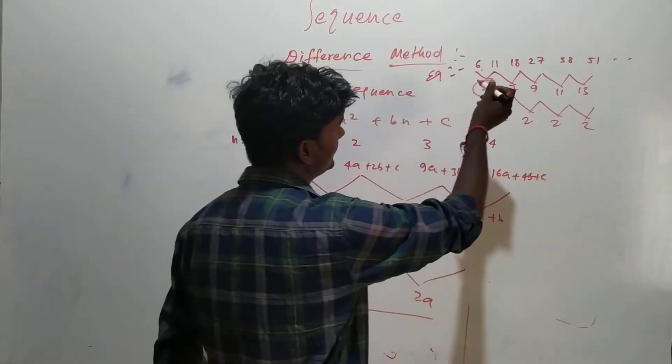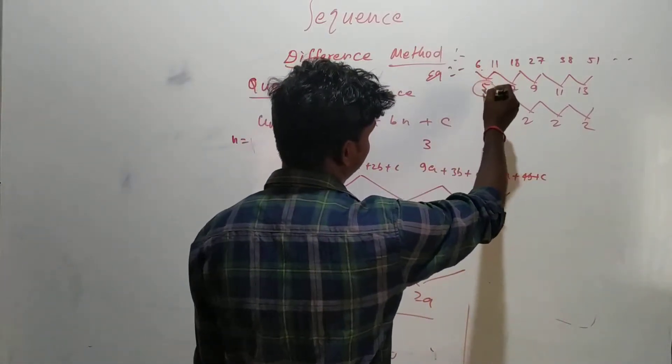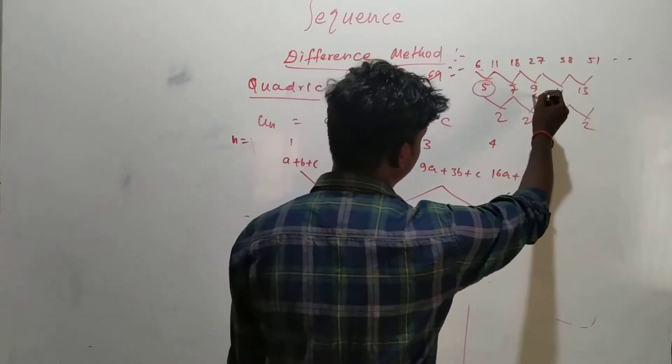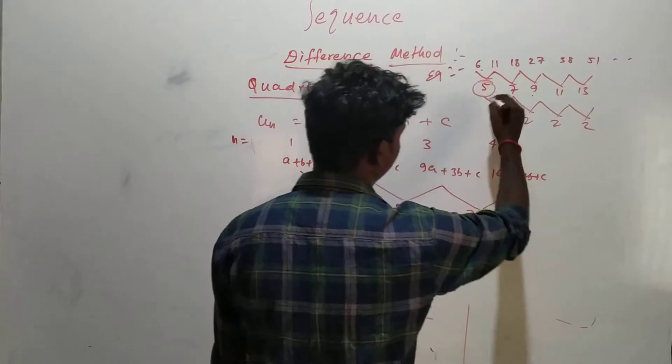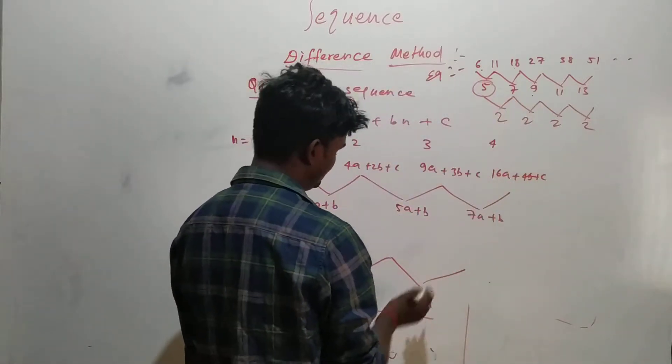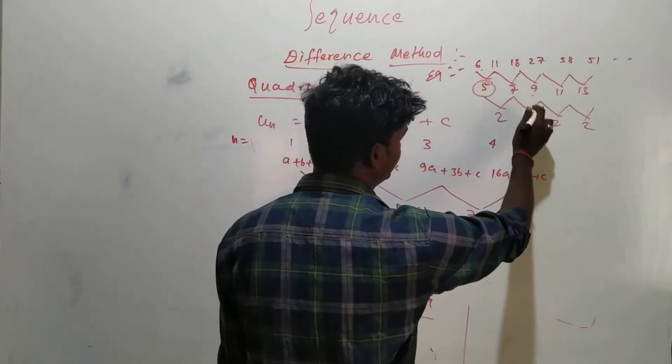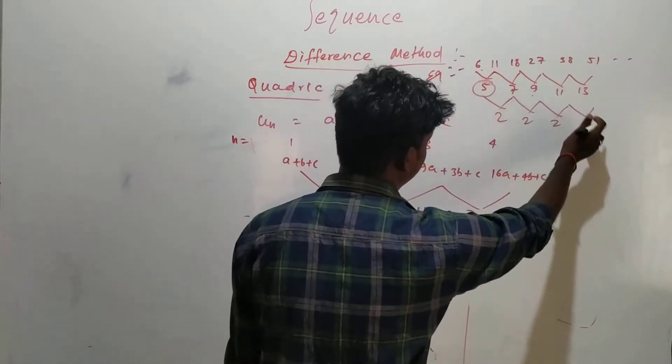So you subtract: 11 minus 6 is 5, 18 minus 11 is 7, 27 minus 18 is 9, and so on. It will be 11 and 13. So again you have to take the difference to get the constant value. So 7 minus 5 is 2, 9 minus 7 is 2, 11 minus 9 is 2, and 13 minus 11 is 2.